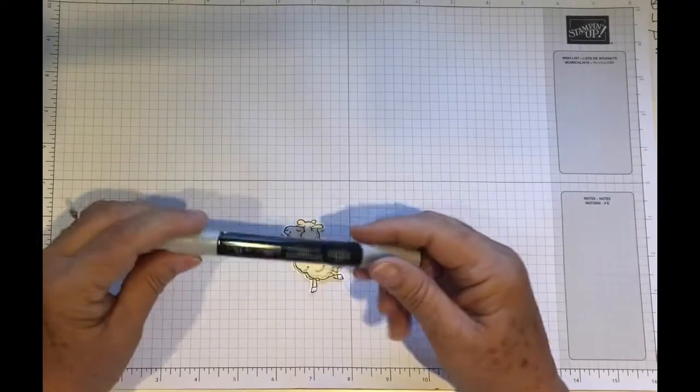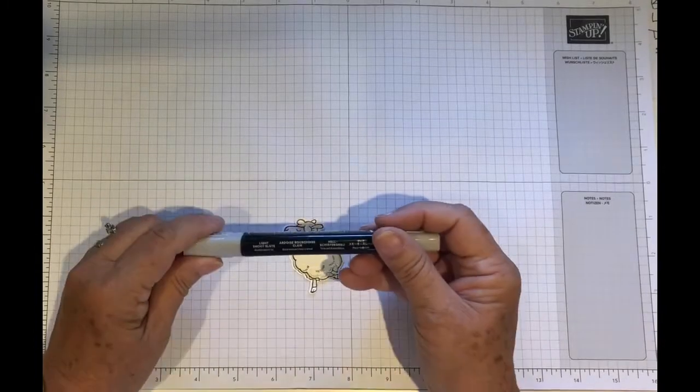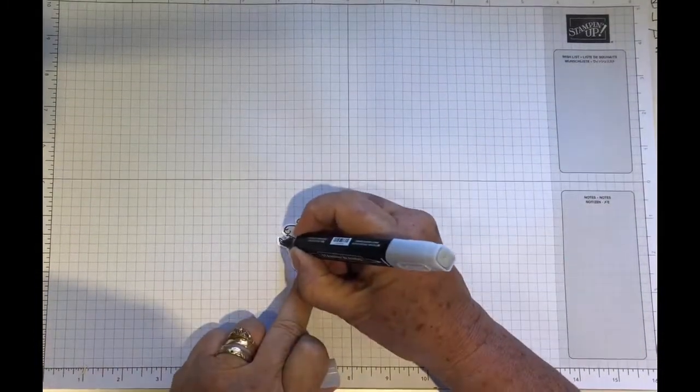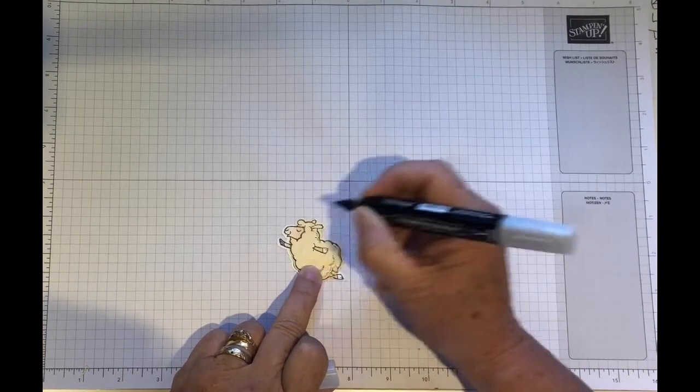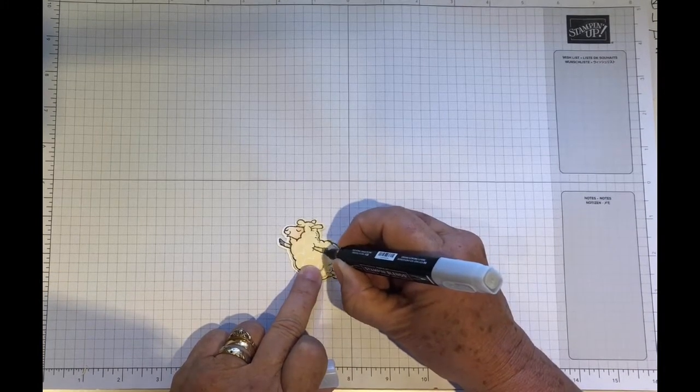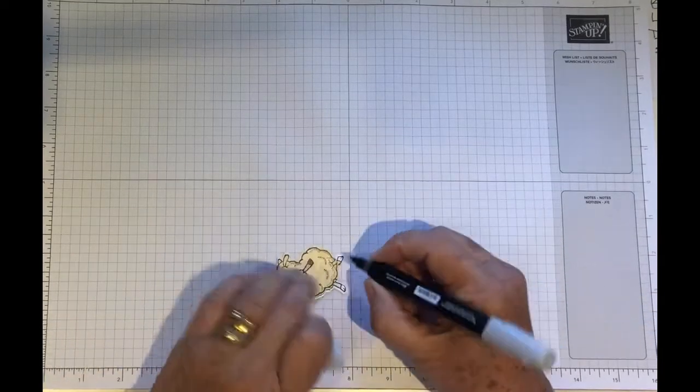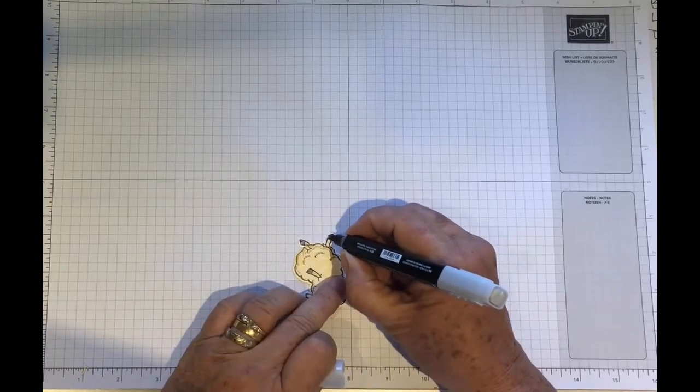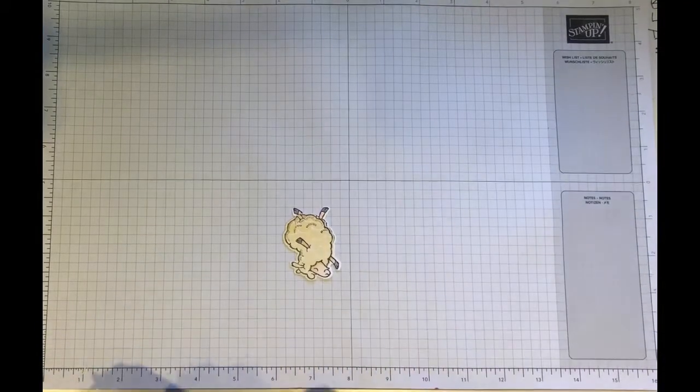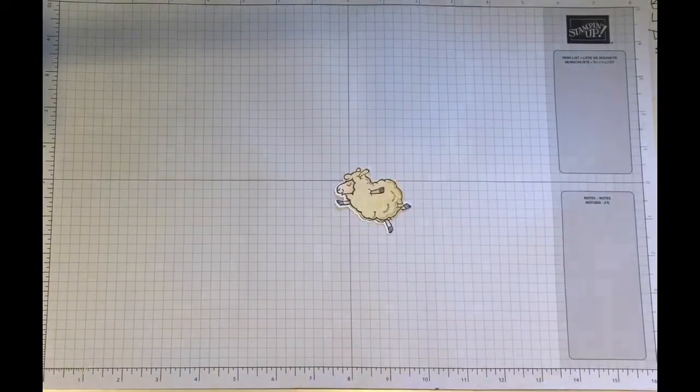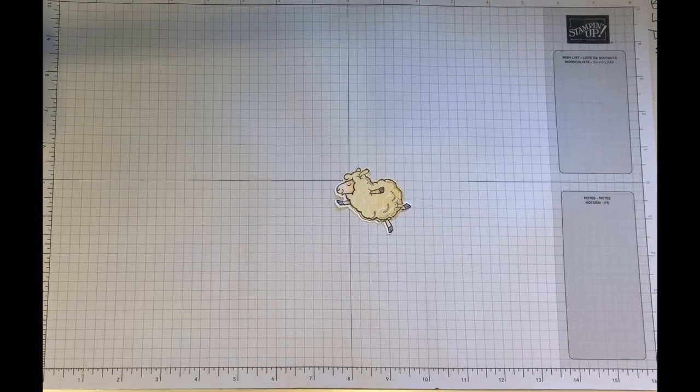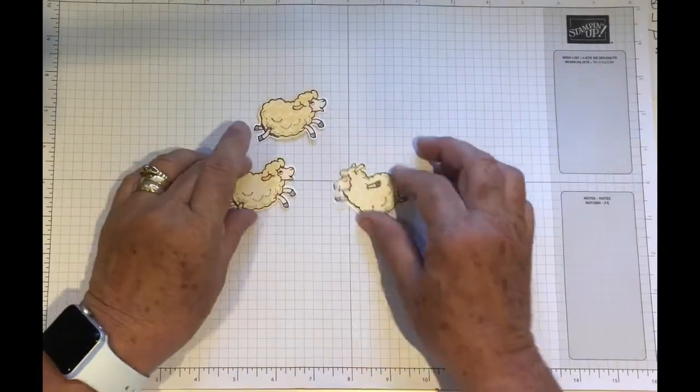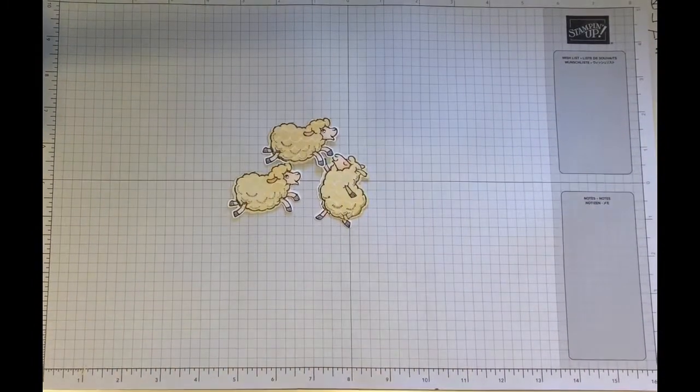It does make a huge difference when you use both of the blending, the dark and the light. So for his toes I'm going to use the light smoky slate. I just thought it was not quite as harsh as black really. There we are. So we need to do all the sheep like this, all three. So here we are, all three done.